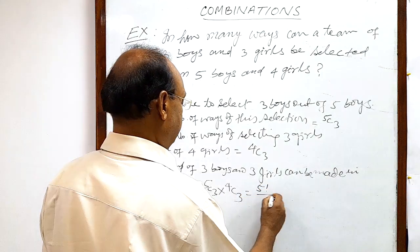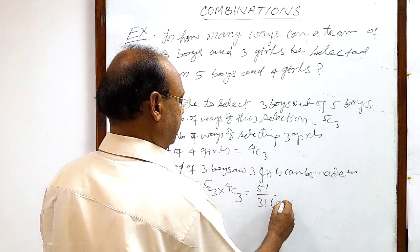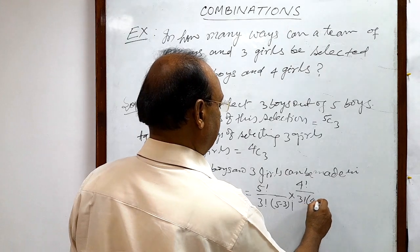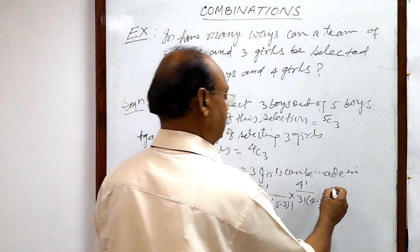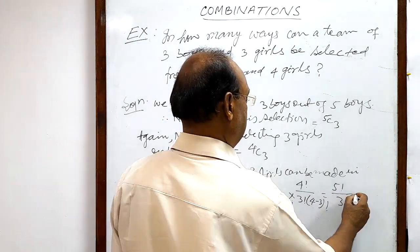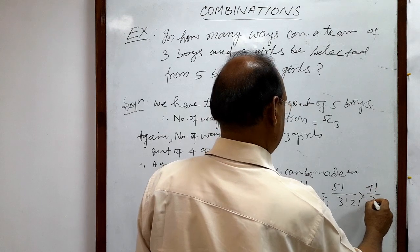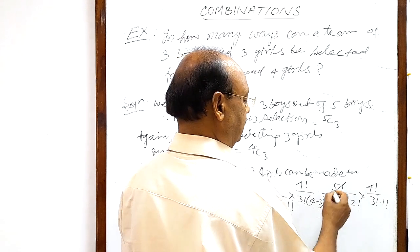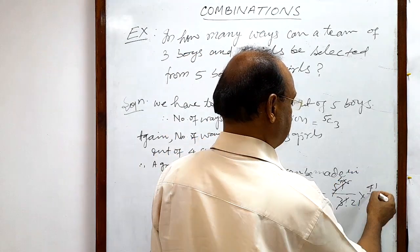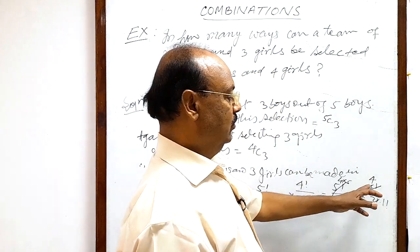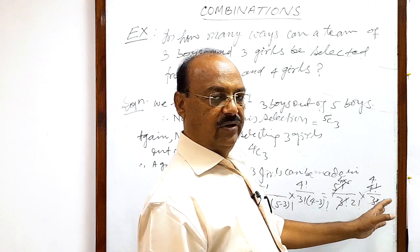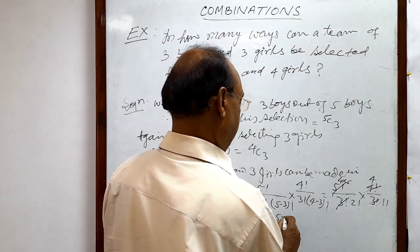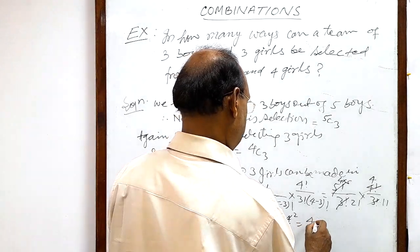Let us calculate it. 5C3 is 5 factorial by 3 factorial into (5 minus 3) factorial, and 4C3 is 4 factorial by 3 factorial into (4 minus 3) factorial. This equals 5 factorial by 3 factorial into 2 factorial, times 4 factorial by 3 factorial into 1 factorial. The 3 factorials cancel out, giving us 4 into 5 divided by 2, multiplied by 4, which equals 40.